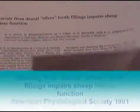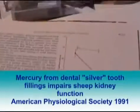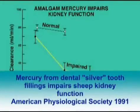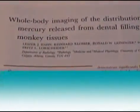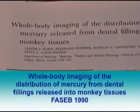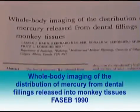Then we measured that the sheep's kidneys dropped in their ability by 60% to clear inulin, an indication of kidney malfunction. Whole body imaging of monkeys found exactly the same way.